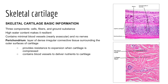As a covering, perichondrium provides resistance from expansion while cartilage is being compressed. The perichondrium itself is vascular, providing cartilage the ability to obtain nutrients and gases and rid itself of wastes. In these images, we see a cross-section of the trachea showing pseudostratified ciliated epithelial tissue, connective tissue, hyaline cartilage with chondrocytes in lacunae, and the perichondrium — made up of dense irregular connective tissue.